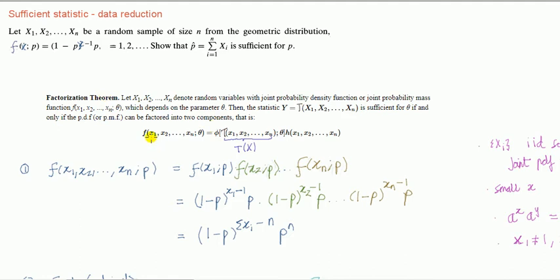write down the joint probability density function, or joint probability mass function in this case because x is discrete here, and then factorize if possible, factorize it into a product of a function that does not depend on the